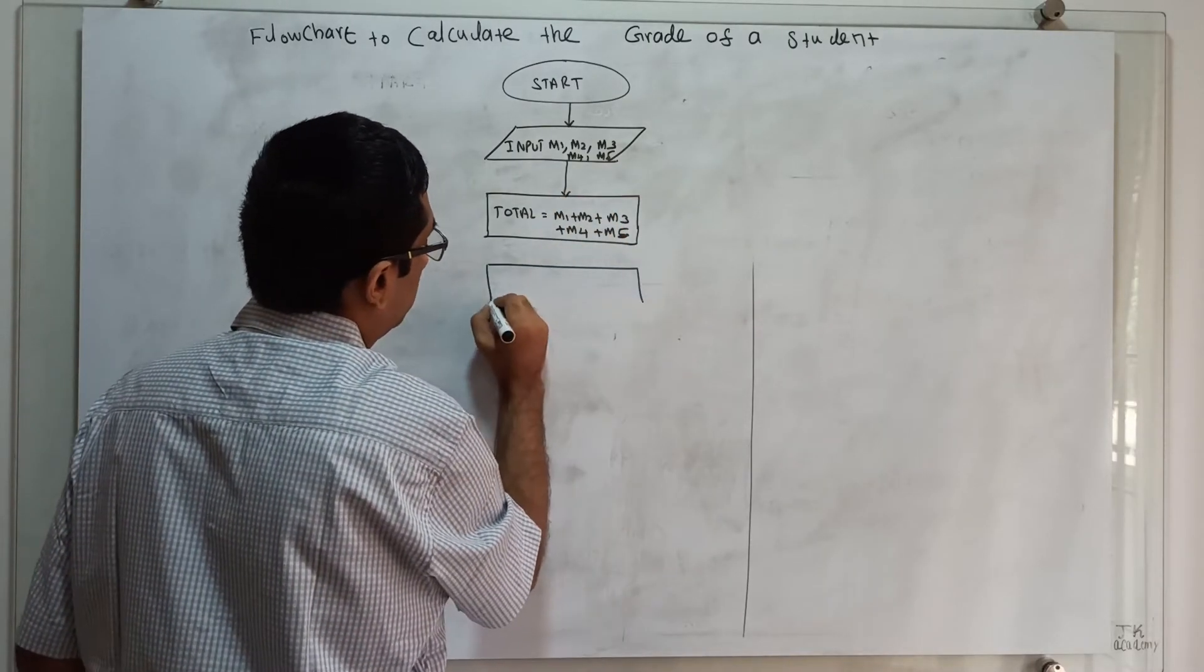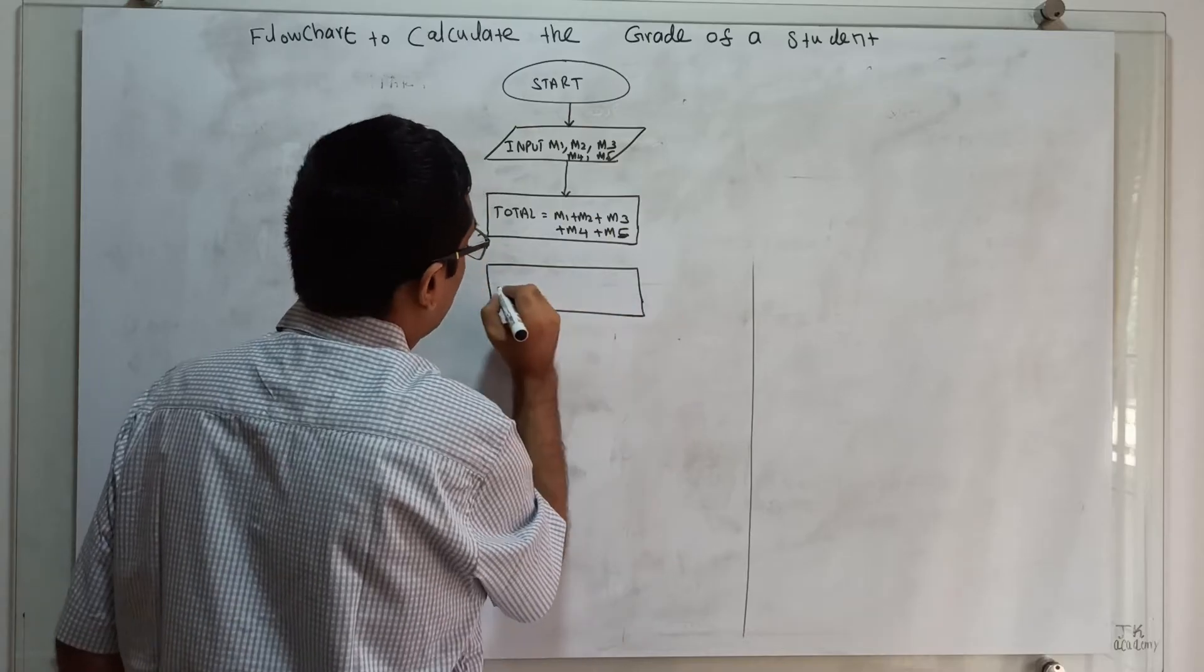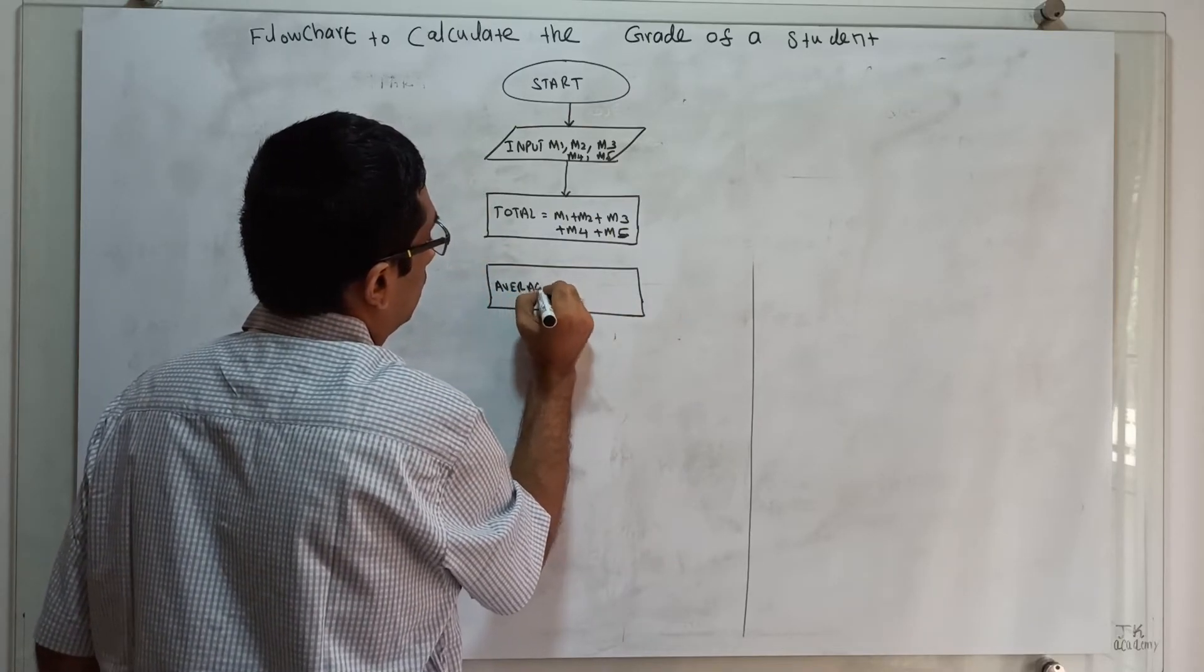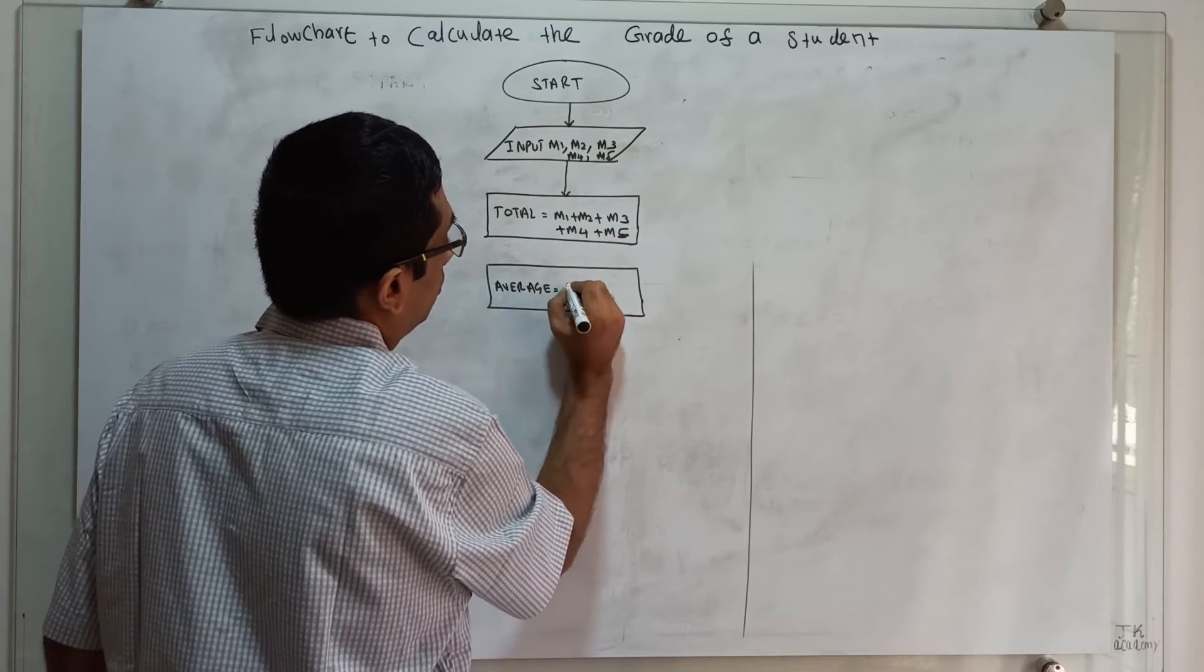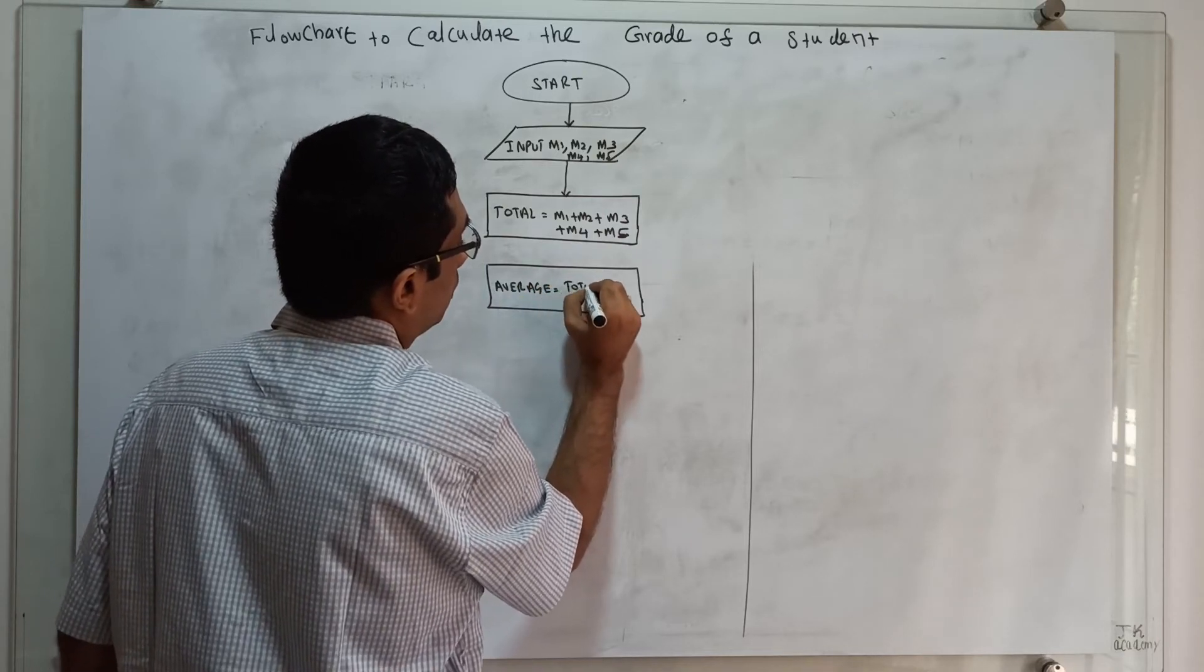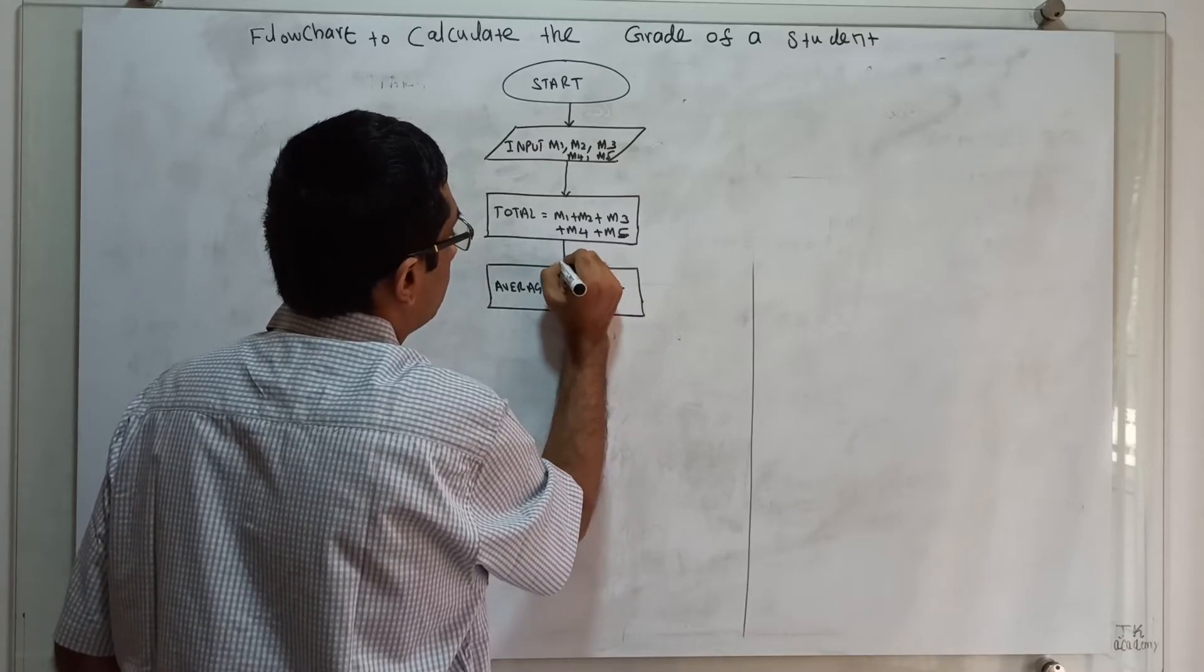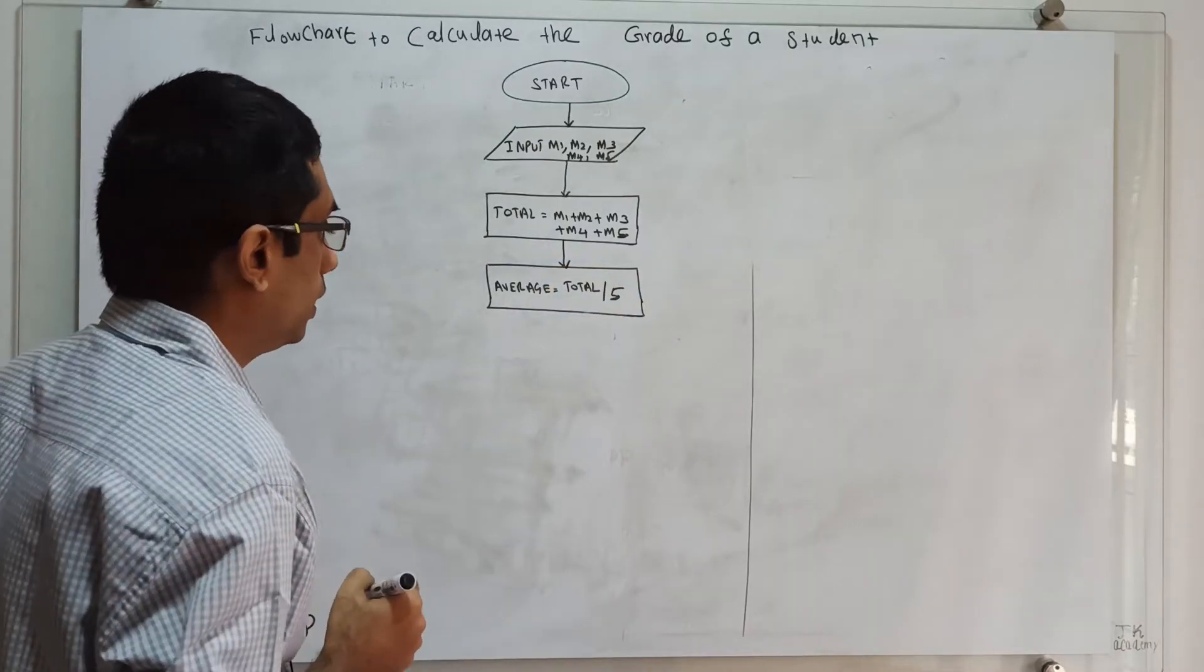Next, average to be calculated. Average equals total divided by 5. So next, we have to check...